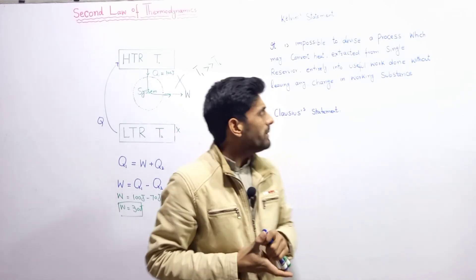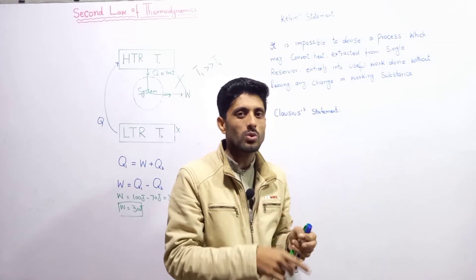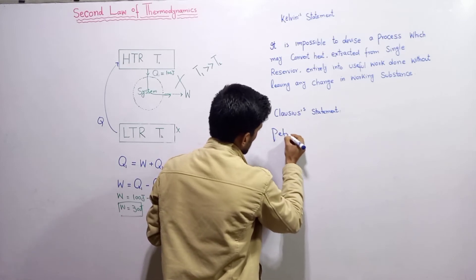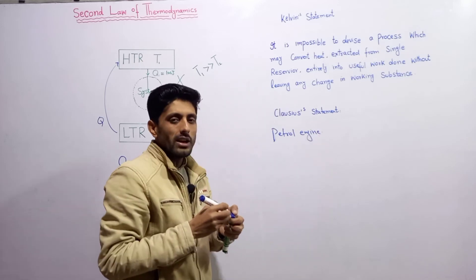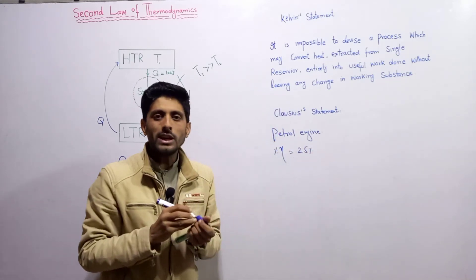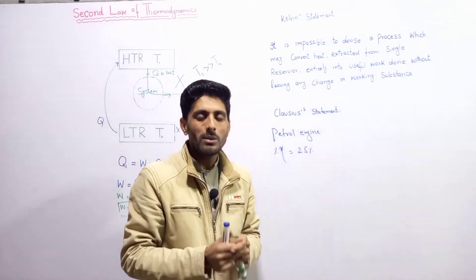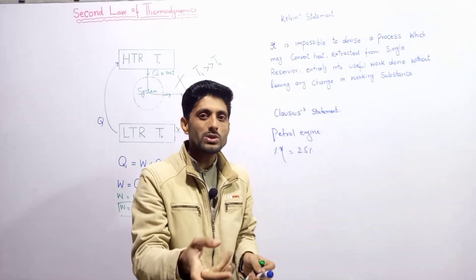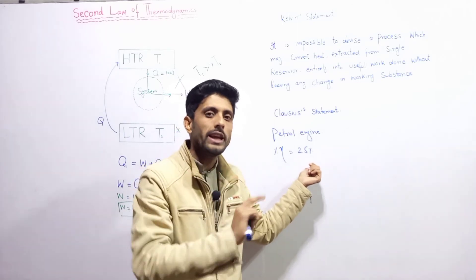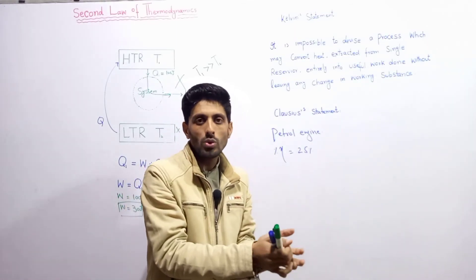According to the Kelvin statement, the totally absorbed heat can never be entirely converted into work done — some part must be wasted. For example, a petrol engine — such as in a motorbike — has an efficiency of only about 25%. So if you put in 100 rupees worth of petrol, only 25 rupees worth of work is obtained; the remaining 75% is expelled to the environment as waste.